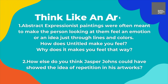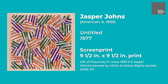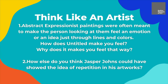Now that we've learned about artist Jasper Johns, let's take a moment to think like an artist. Abstract expressionist paintings were often meant to make the person looking at them feel an emotion or an idea just through lines and colors. How does Untitled make you feel? Why does it make you feel that way? How else would you think Jasper Johns could have showed the idea of repetition in his artworks?